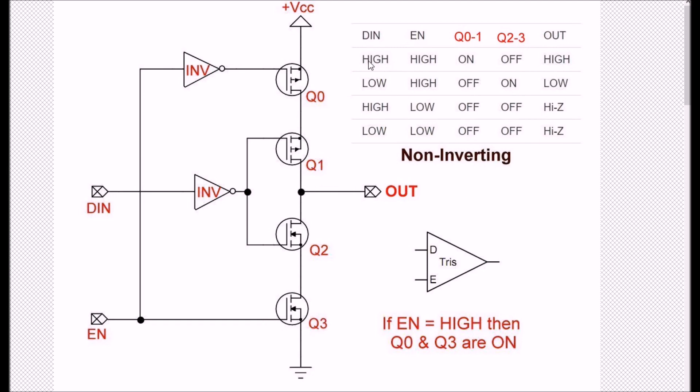Look over here at my table. DIN is high, enable is high, Q1 and 0 are on, Q2 and 3 are off. I have a high output.